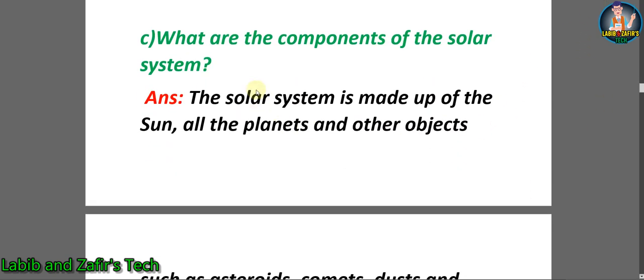Number C: What are the components of the solar system? Answer: The solar system is made up of the sun, all the planets and other objects such as asteroids, comets, dust and gas.